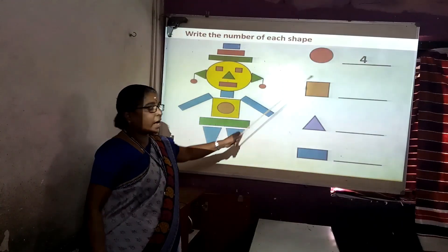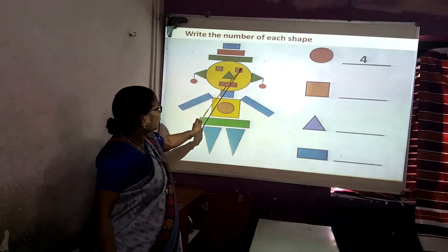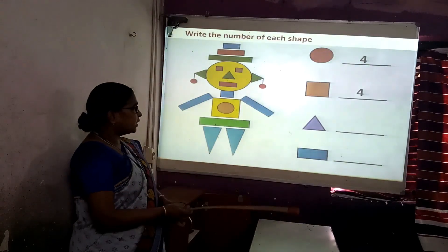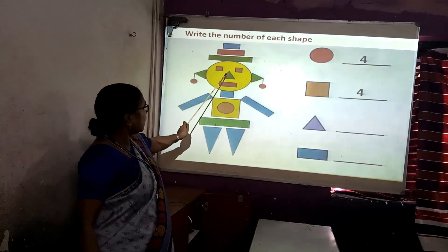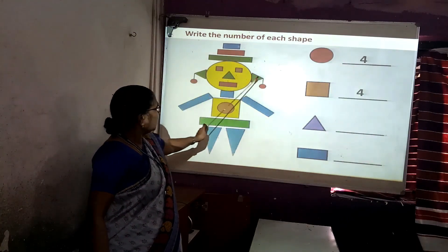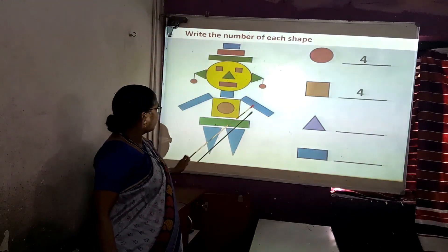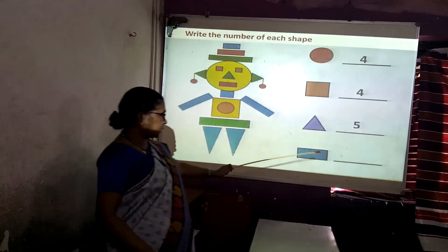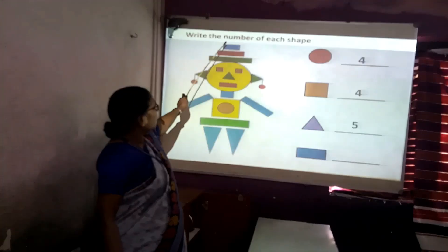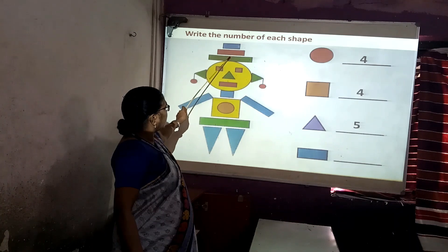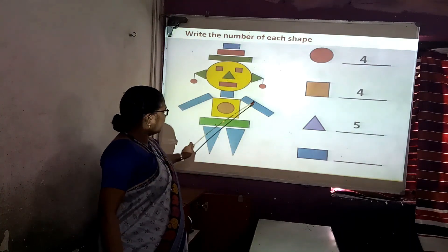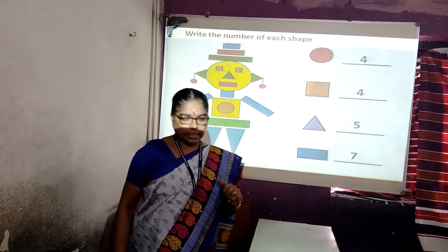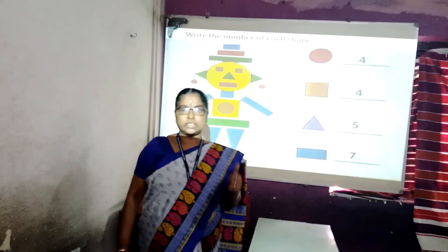Now let's see how many squares there are — one, two, three, four. Four squares are there. Now let's see how many triangles there are — one, two, three, four, five. Five triangles are there. Now let's see how many rectangles there are — one, two, three, four, five, six, seven. Yes, seven rectangles. I hope you all enjoyed this topic.